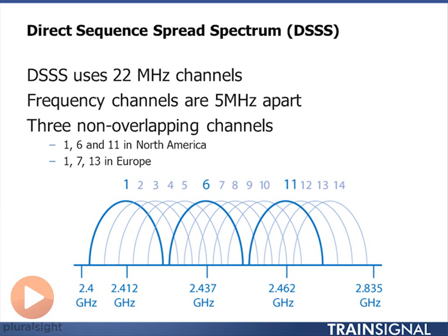Channels are all 5 megahertz apart, but there are only three non-overlapping channels. If you deploy your wireless LAN on channel 1 and channel 2, they are overlapping, which means they will interfere with each other. So in an enterprise setting, if you're using the 2.4 gigahertz band, you would deploy on channels 1, 6, and 11.